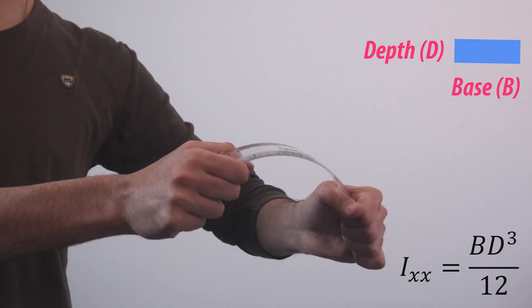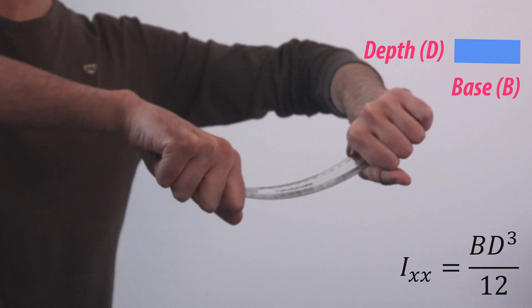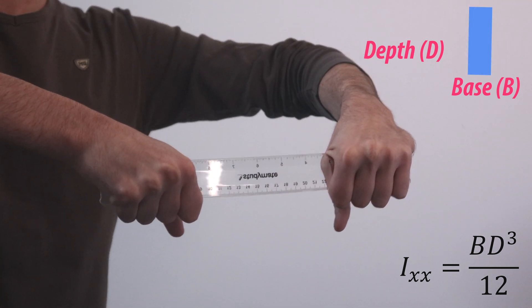This is similar to bending a ruler, which is easier to bend in a certain way when it is flat, but it is hard to bend on its side.